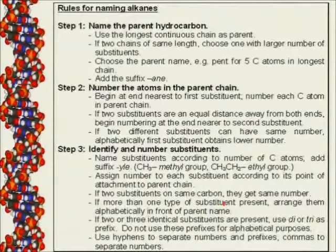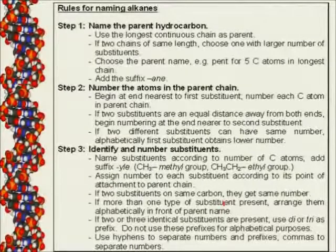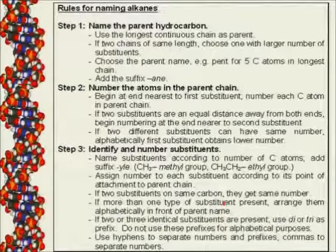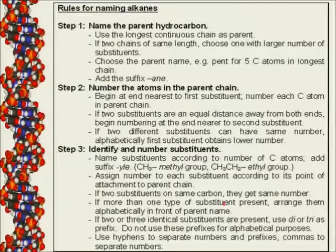When you look at the alkane, there are rules we have to use to name the compounds. There are 3 steps to follow. The first step is to name the parent of the hydrocarbon. You look at the whole compound and determine which is your longest chain. If you've got two chains of the same length, you can choose from either side — the name will still be correct.